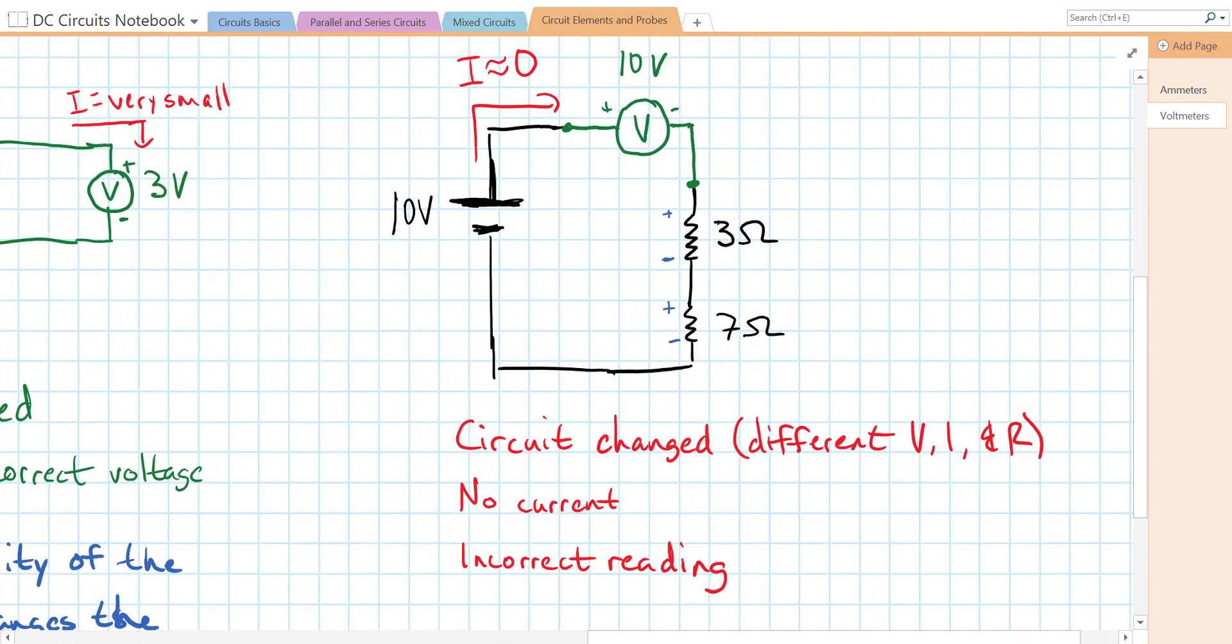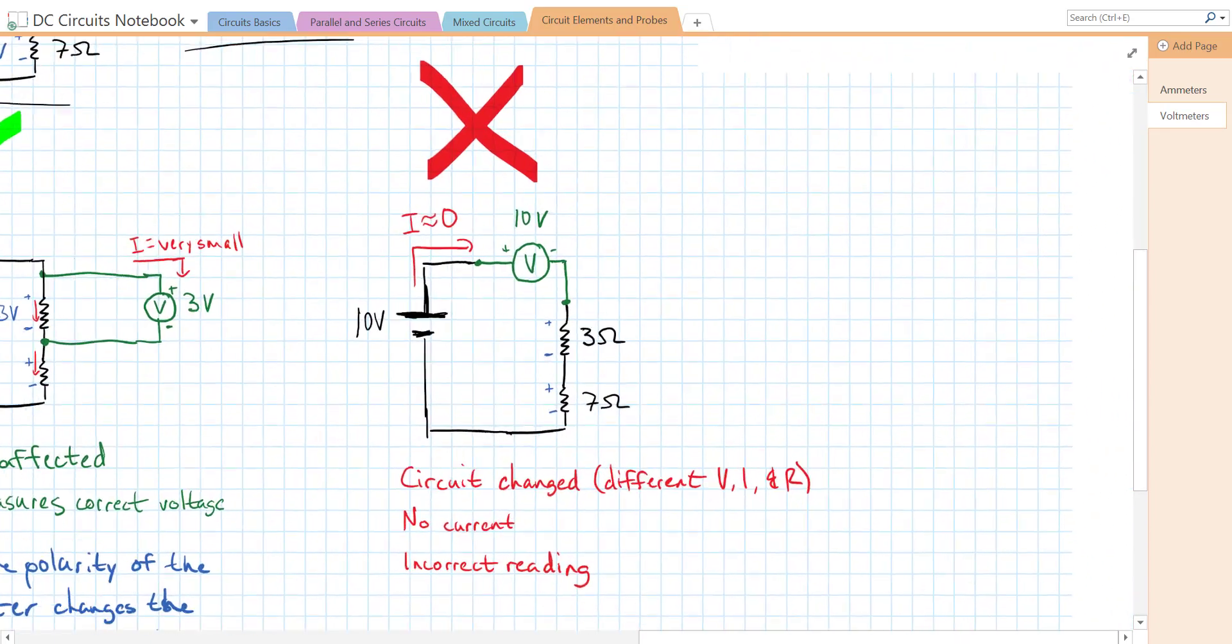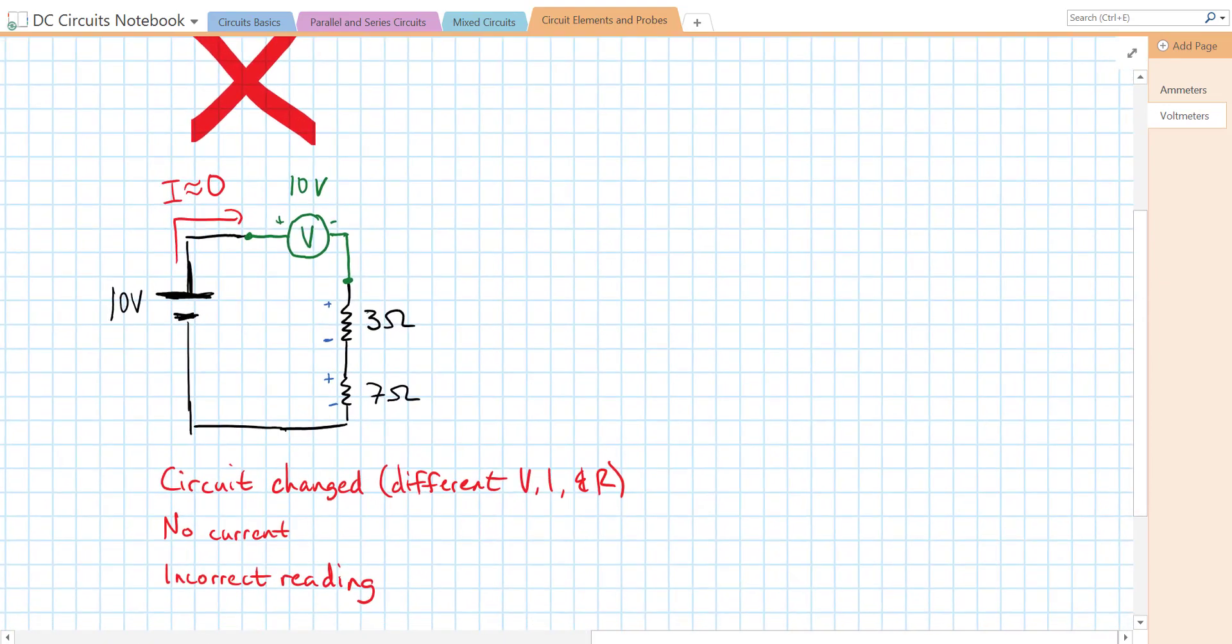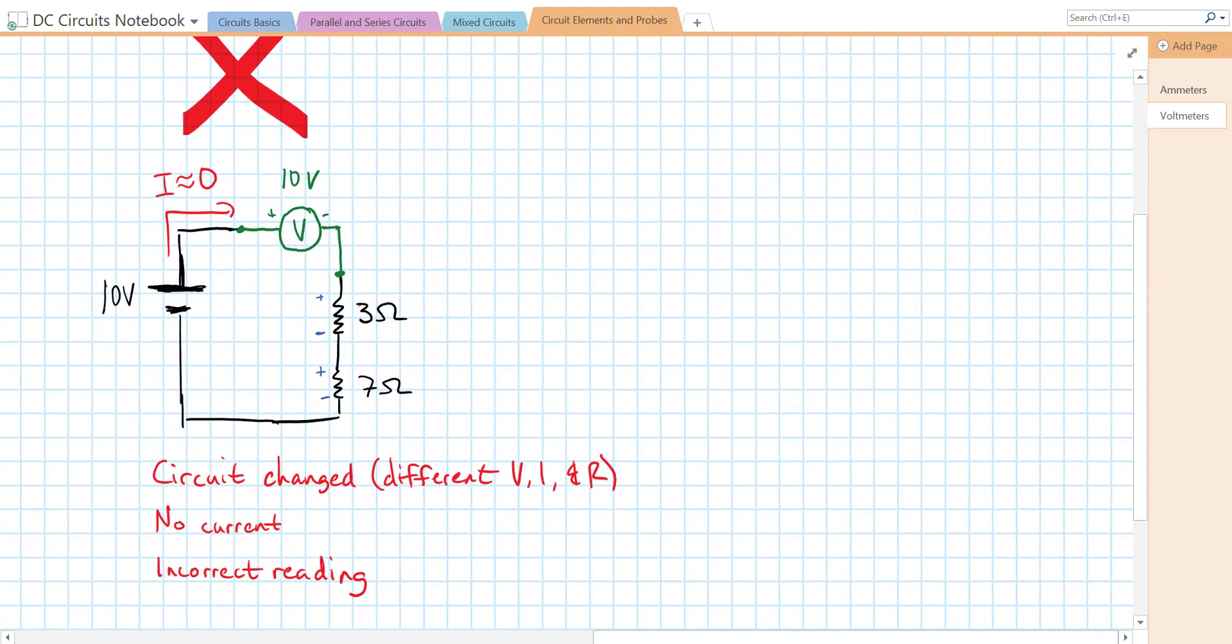Here's the wrong way to connect a voltmeter. And this is a voltmeter connected in series. If we connect our voltmeter in series here, that's before or after our 3 ohm resistor, well, our voltmeter has a very high resistance. So that means that there's going to be such a high resistance, there's going to be basically no current that comes from the battery, goes through the circuit.